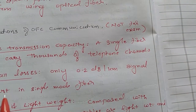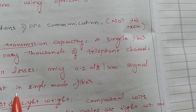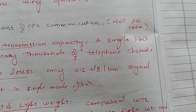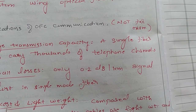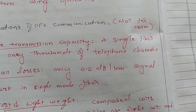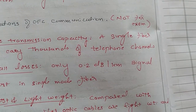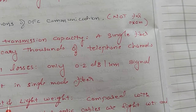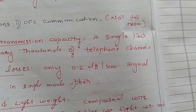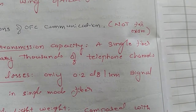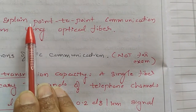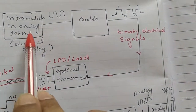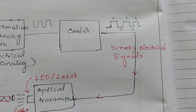Additional advantages include low cost and lightweight construction. The raw material for optical fiber is silica sand, which is cheaply available, whereas copper cable systems use copper, which is an expensive raw earth metal. Optical fiber is made of silica glass, so it is low cost and lightweight compared to copper cable systems. For the exam, try to write the answer explaining the point-to-point communication system using optical fiber, including the block diagram, each component, and the concept of repeaters.